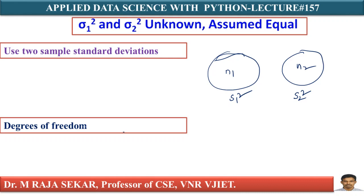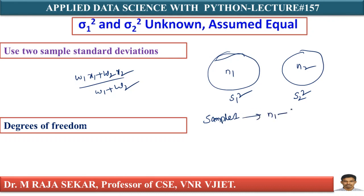The weighted variance is analogous to the weighted mean: W1·X1 + W2·X2 divided by W1 + W2. Here, the weights are the degrees of freedom. For sample 1, degrees of freedom is N1 minus 1, and sample variance is S1 square. For sample 2, degrees of freedom is N2 minus 1, and sample variance is S2 square.